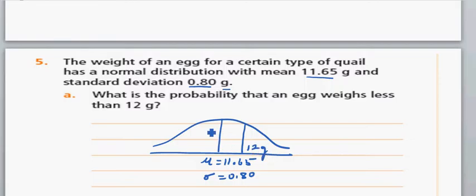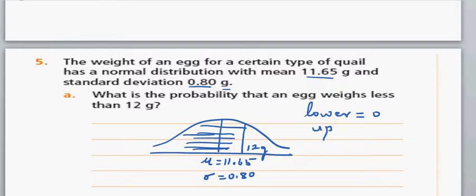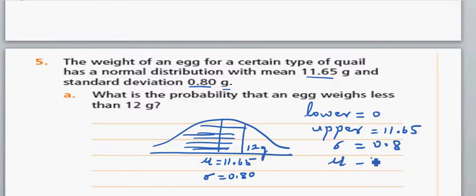So you want to find this area. The lower would be 0, the upper would be 12, your standard deviation is 0.8, and your mu (mean) is 11.65.